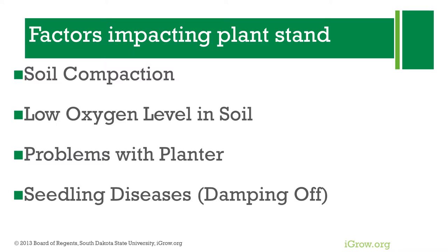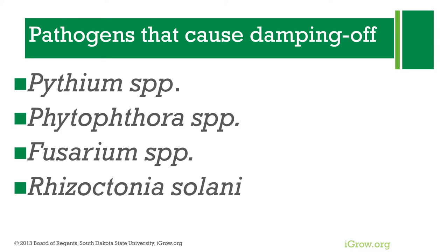Plant stand is a really important determinant of yield. A number of factors can affect plant stand, and those include soil compaction, low oxygen in the soil due to saturation with water, and it could also be because of a faulty planter. Another common problem can be seedling diseases, and the term used for seedling diseases is damping off. Damping off is caused by a number of pathogens, including Pythium, Phytophthora, Fusarium, and Rhizoctonia.